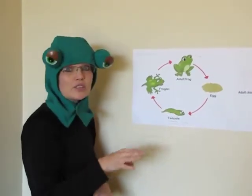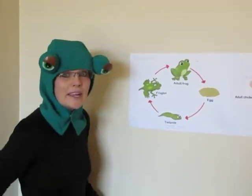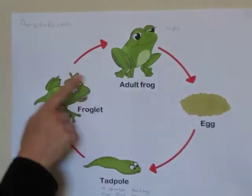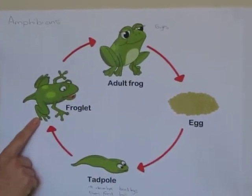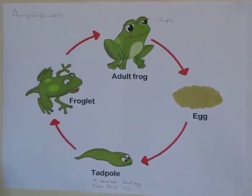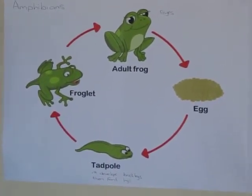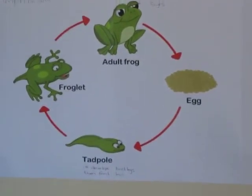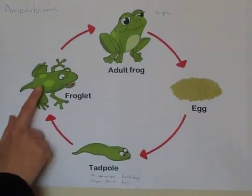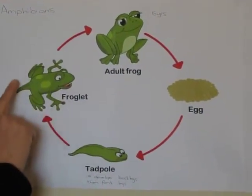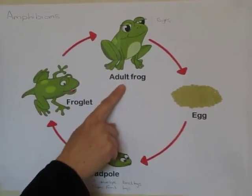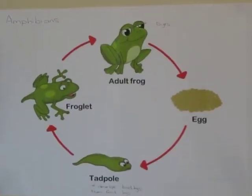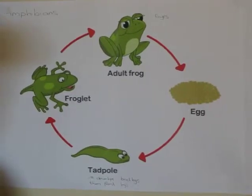The tadpole then starts to get its back legs, and then front legs, and becomes a froglet. This is where we can see that a frog is amphibian, because it can live on water and on land. Now the frog grows and becomes an adult frog. This whole life cycle takes about five years.